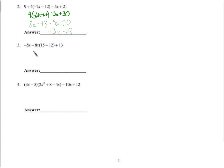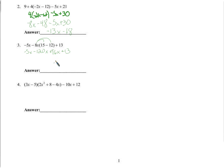Next, I don't have anything outside the parentheses that can be combined, so let's go ahead and distribute. We have negative 5x, and negative 8x times 15 is negative 15 times 4 is 60, so 120 — negative 120x. Negative 8x times negative 12 is a positive, so negative 120x plus 96x plus 13. Combining like terms: negative 5x minus 120x is negative 125x plus 96, which gives us negative 29x plus 13.